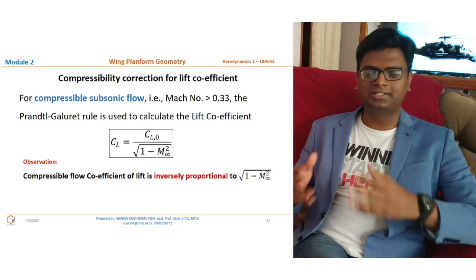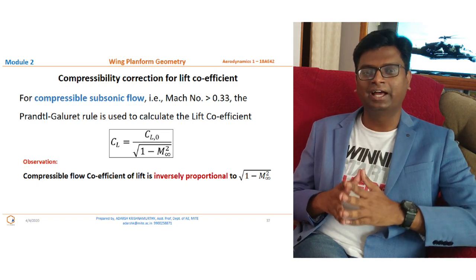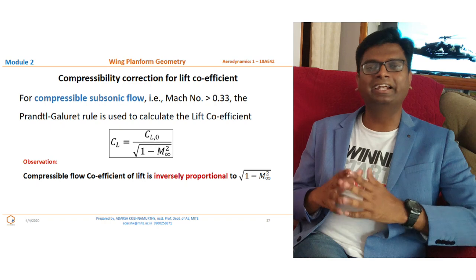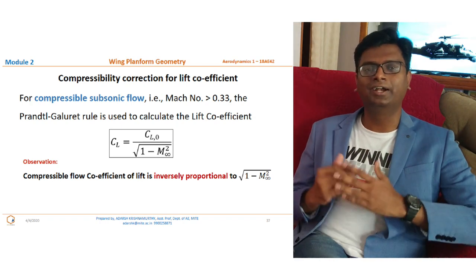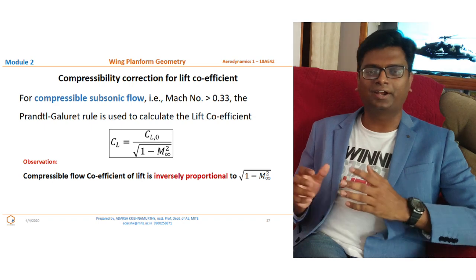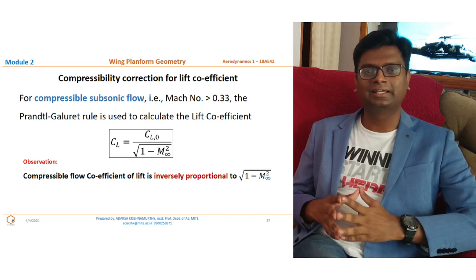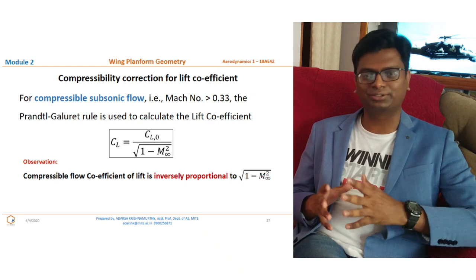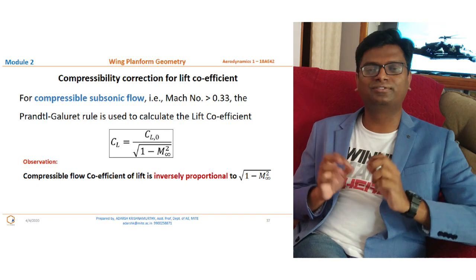Just as we saw a compressibility correction factor for the coefficient of pressure, there is an analogous correction for the lift coefficient. At lower speeds, the lift coefficient remains almost constant, but as the Mach number enters the compressible flow regime (above 0.33), a different equation is needed. Again using the Prandtl-Glauert rule, the compressible lift coefficient is Cl = Cl₀ / √(1 − M∞²), where Cl₀ is the lift coefficient at Mach zero for a given angle of attack.